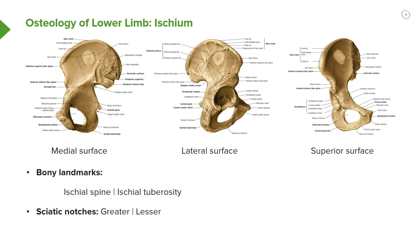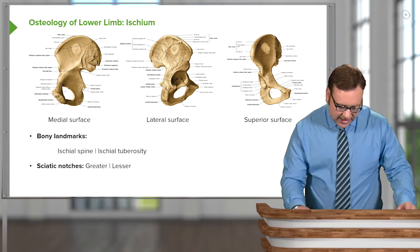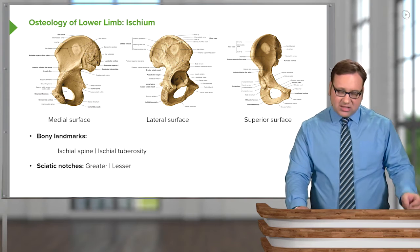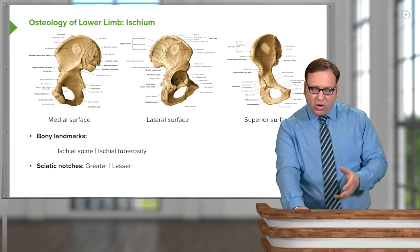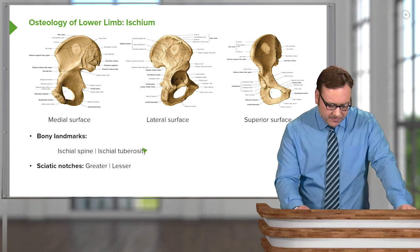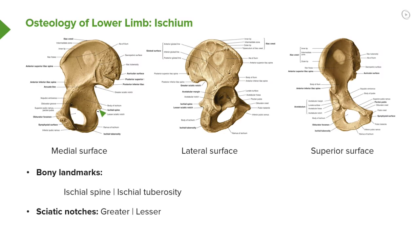If we look at the ischium and some bony landmarks, there are two important bony landmarks protruding posteriorly from the ischium: the ischial spine and the ischial tuberosity. Seen here on the medial surface view, but projecting posteriorly, we have the ischial spine superiorly and the ischial tuberosity inferiorly.